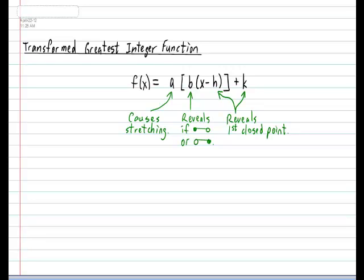Let's start with the variable a first. We know that a will cause stretching in the graph, so the graph will get taller or shorter based on what a is. It does that by playing around with the counter step height. So in your notebook, please put: counter step height. The counter step height can be calculated by taking the absolute value of a. The expression absolute value of a is written with the letter a surrounded by two tall straight line brackets.